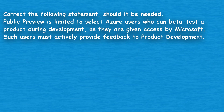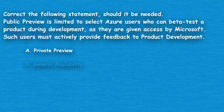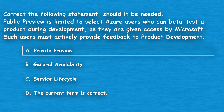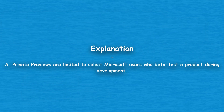The next question: correct the following statement if needed. Public Preview is limited to select Azure users who can beta test a product during development, as they are given access by Microsoft. Such users must actively provide feedback to product development. Option A: Private Preview. Option B: General Availability. Option C: Service Lifecycle. Option D: The current term is correct. The correct answer is Option A, Private Preview. Private Previews are limited to select Microsoft users who beta test a product during development.